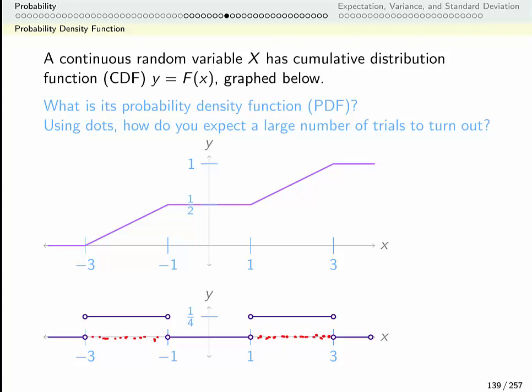And because it's constant, the density is going to be pretty much constant. It's not going to be really dense somewhere and really sparse somewhere else. So if I were to do, say, 50 trials of this random variable, I would expect that when I recorded them, the numbers would look something like the red dots below.